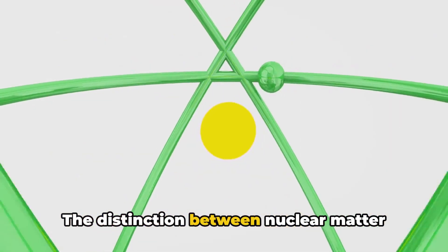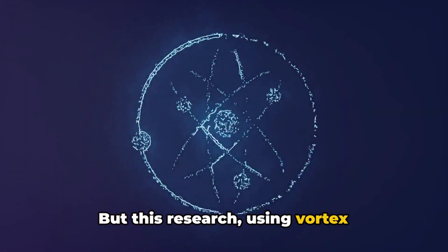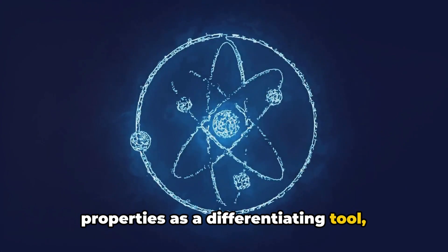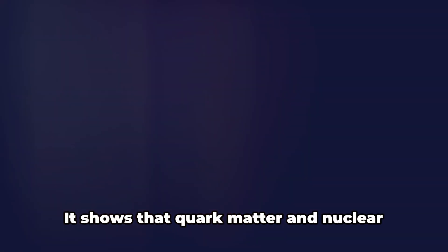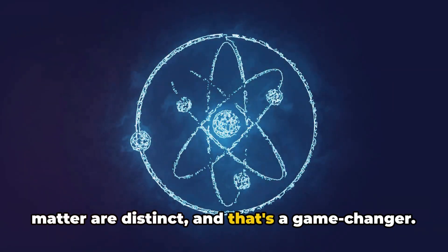The distinction between nuclear matter and quark matter has been a hot topic of debate among scientists. But this research, using vortex properties as a differentiating tool, might just tip the scales. It shows that quark matter and nuclear matter are distinct, and that's a game changer.